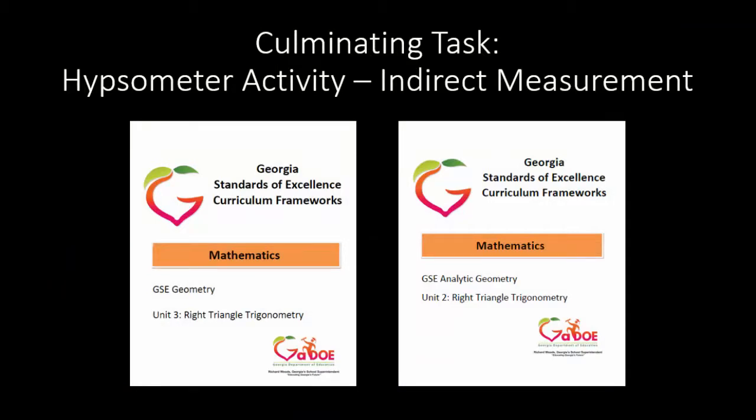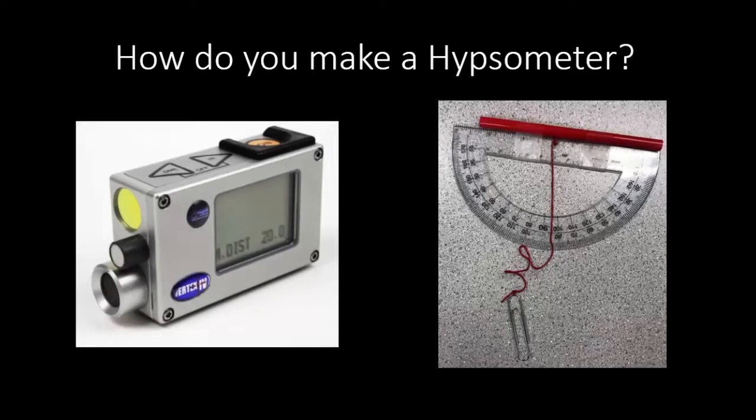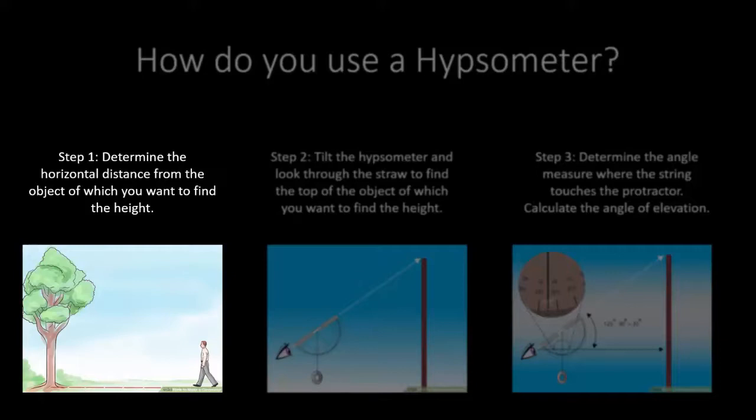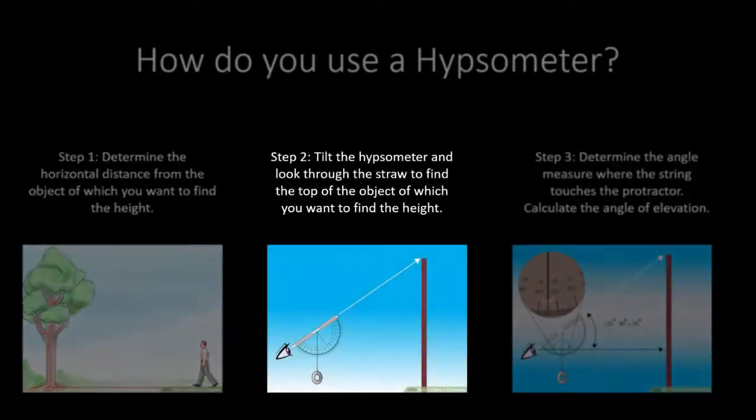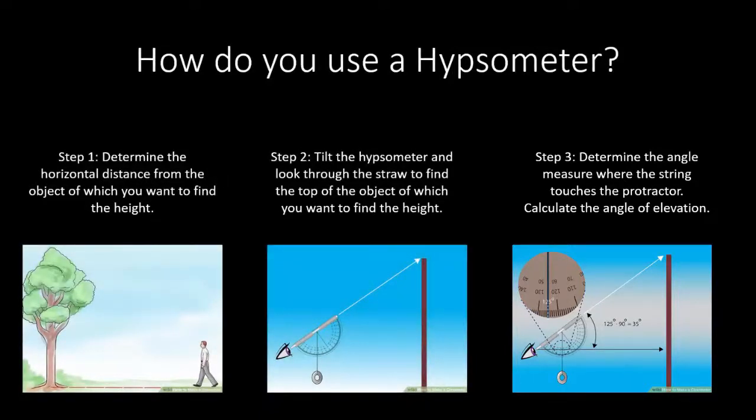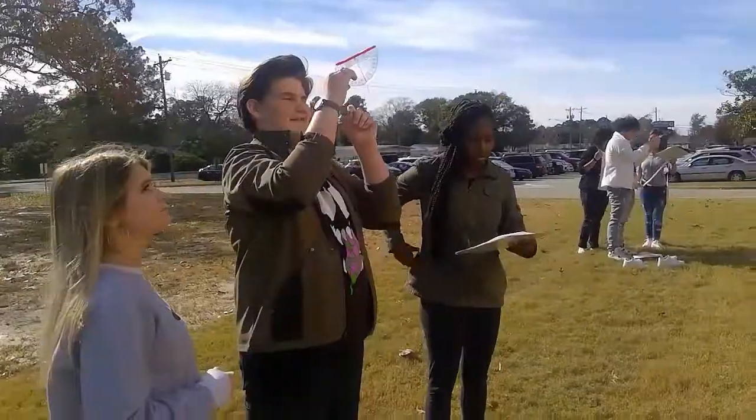The culminating task, Hypsometer Activity, Indirect Measurement, can be found in the Georgia Frameworks for Geometry Unit 3 and Analytic Geometry Unit 2. A hypsometer, sometimes called a clinometer, is an instrument for measuring height or elevation. An inexpensive version to use with students may be created using a straw, string, and paper clip. To use a hypsometer, you first determine the horizontal distance from the object you want to find the height of. Then, tilting the hypsometer and looking through the straw, you find the top of the object you want to find the height of. Finally, you determine the angle where the string touches the protractor and calculate the angle of elevation. Then, using trigonometric ratios, you can find your height of the object. These students use trigonometry and the hypsometer to estimate the height of the building.